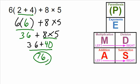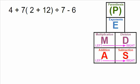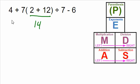Let's do another example. Let's clear the board. Here we go — so if we're looking at this one, what would be our first operation? Do we have anything in the parentheses? Yes, we have something in the parentheses: 2 plus 12. Since 2 plus 12 is inside the parentheses, we're going to solve that first, and we're going to say that is 14. I'm going to rewrite everything else.